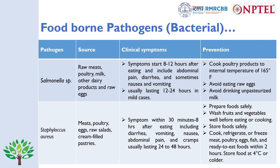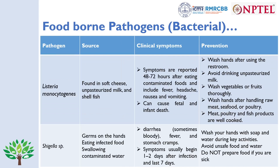Staphylococcus aureus common sources are meat, poultry, eggs, raw salads, and cream-filled pastries. Symptoms include diarrhea, vomiting, nausea, and abdominal cramps usually lasting 24 to 48 hours. Prevention includes preparing food safely, washing fruits and vegetables well before eating or cooking, storing food safely, and cooking or refrigerating meat, poultry, and fish within two hours of removal from cold storage, storing food at 4°C or colder.